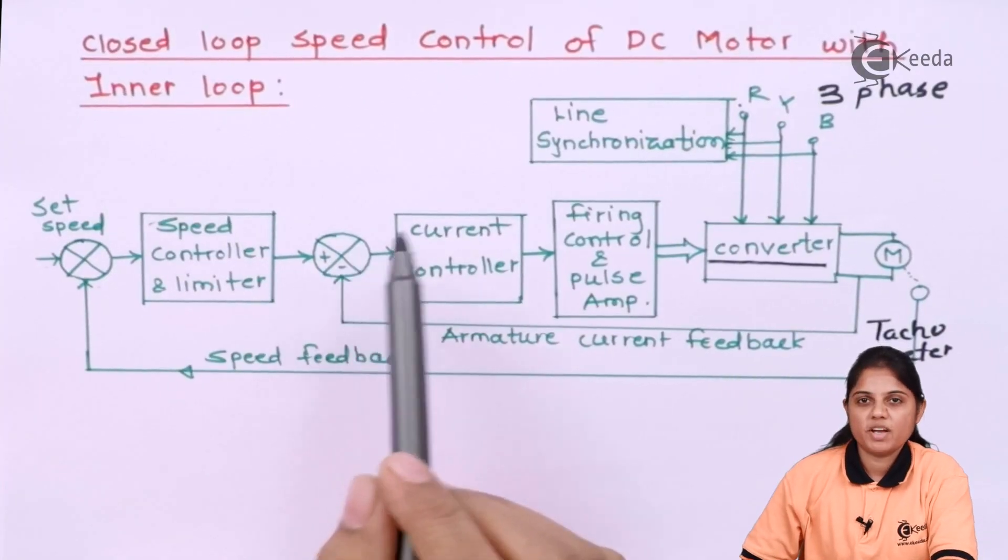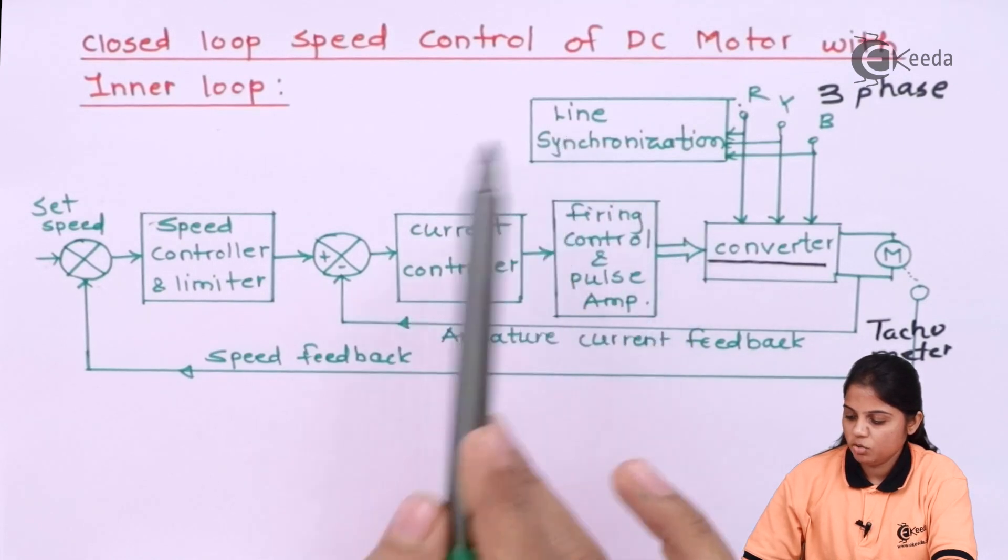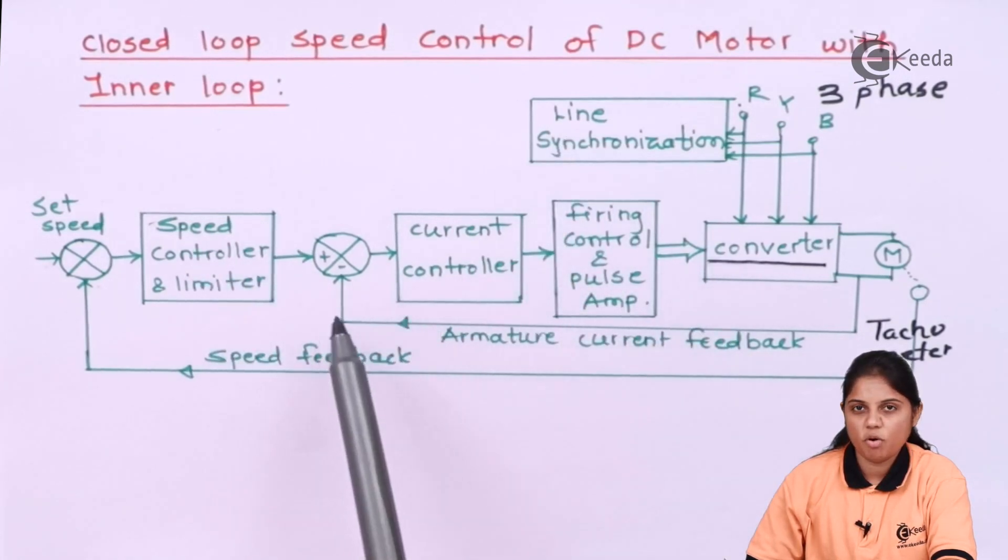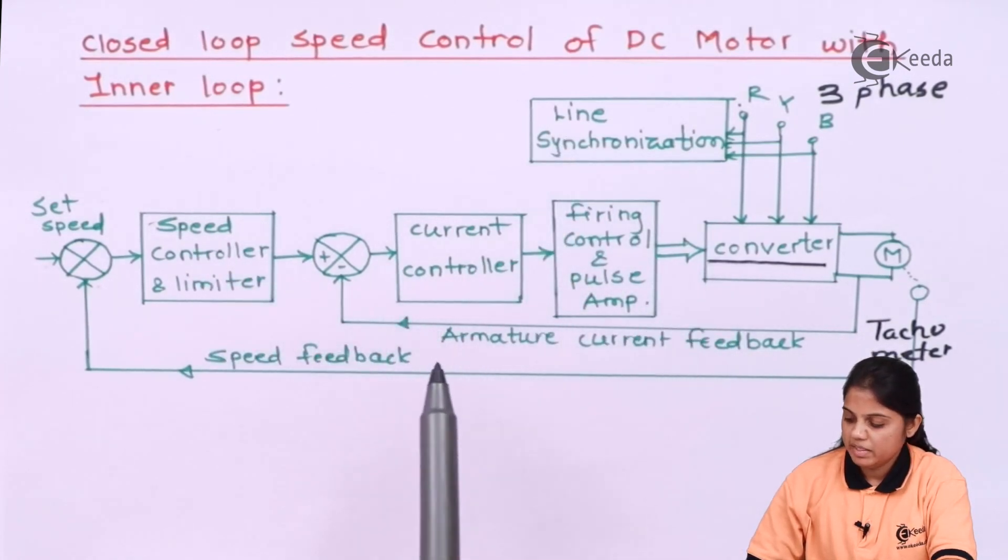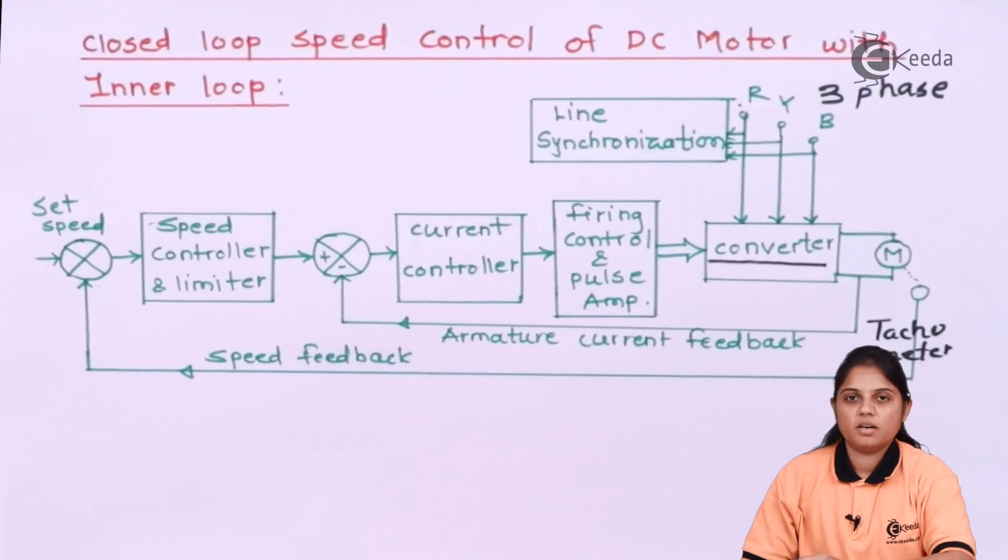So this is the diagram we have studied in the previous video where I have explained you what is the requirement of all these blocks. Now here in this video I am going to explain you what is the requirement of an inner loop.